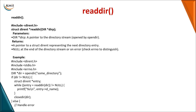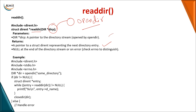Now if you want to read the contents from a directory, the function is readdir and you specify the directory pointer. This pointer comes from opendir — you cannot use readdir directly. You must first open the directory with opendir and then proceed with readdir. On success, it returns a structure indicating the next directory entry available.